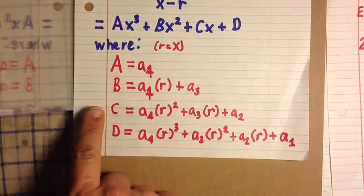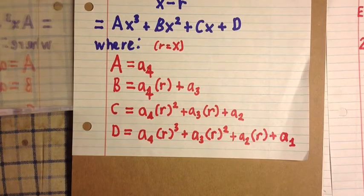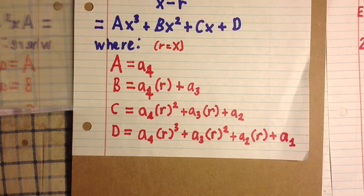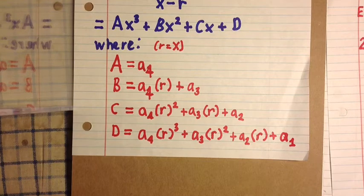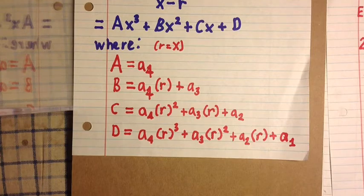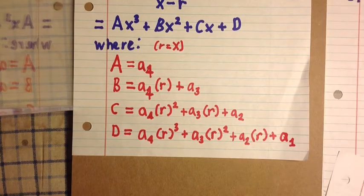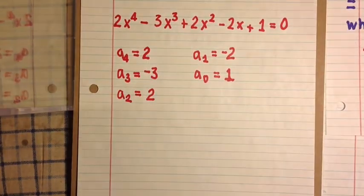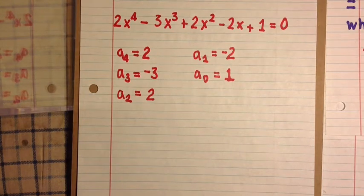Recall that capital A equals A4, capital B equals A4 times R plus A3, capital C equals A4 times R squared plus A3 times R plus A2, and capital D equals A4 times R cubed plus A2 times R plus A1. And for the problem we are working with, A4 equals 2, A3 equals negative 3, A2 equals 2, A1 equals negative 2, and A0 equals 1.